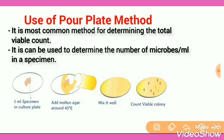This is the most common method for determining the total viable count — to determine the number of microbes per ml in a specimen. This method is helpful for counting the number of microbes inside a 1 ml specimen.